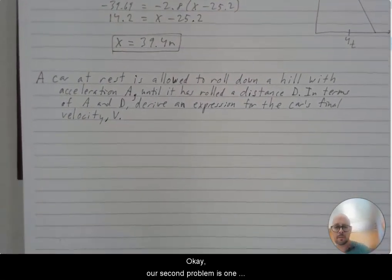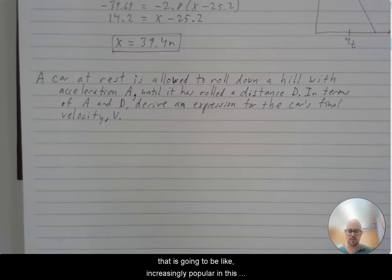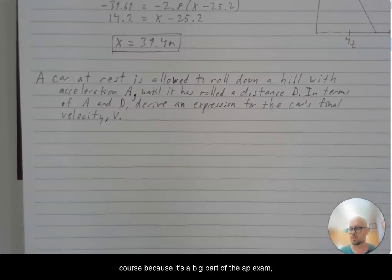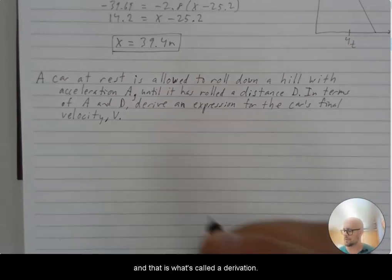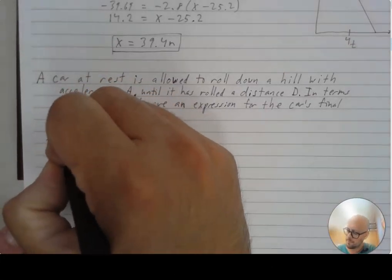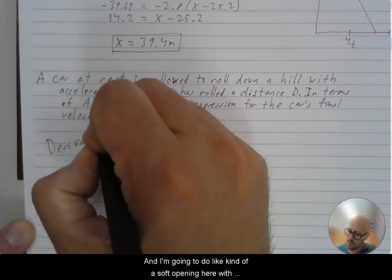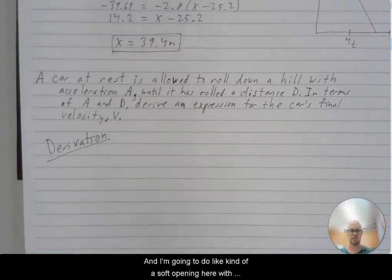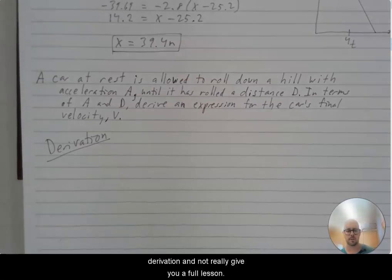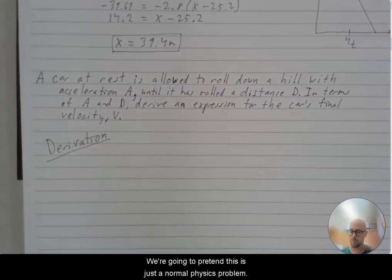Okay. Our second problem is one that is going to be like increasingly popular in this course because it's a big part of the AP exam. And that is what's called a derivation. And I'm going to do kind of a soft opening here with derivation and not really give you a full lesson. But we're going to pretend this is just a normal physics problem.